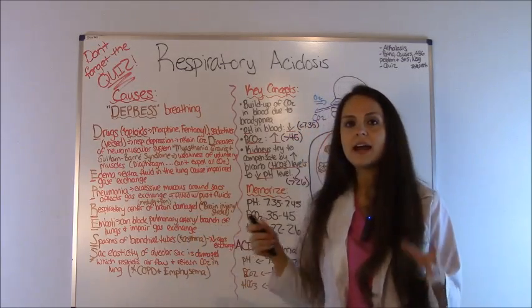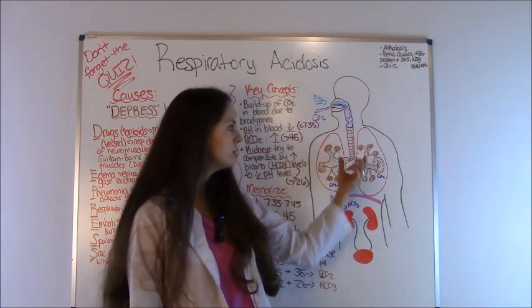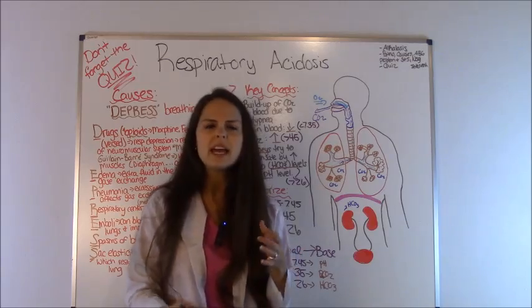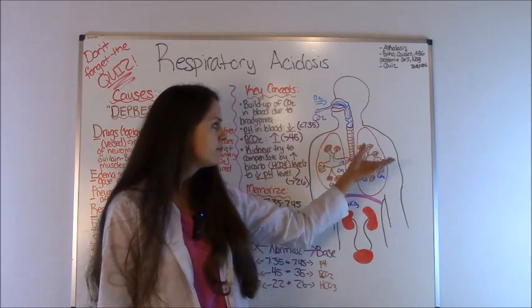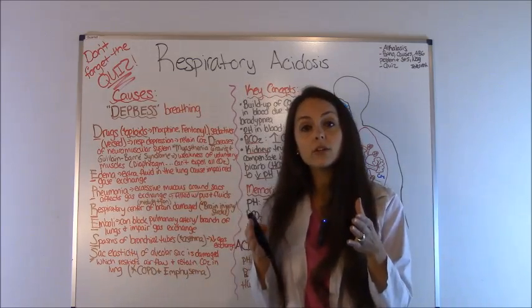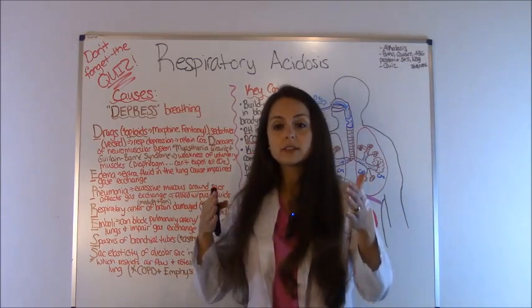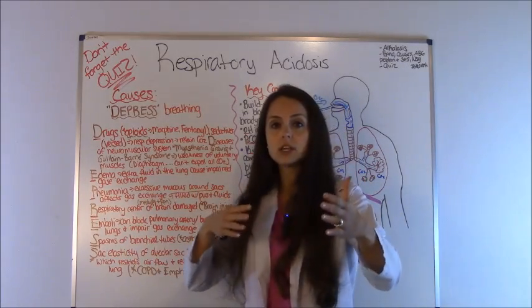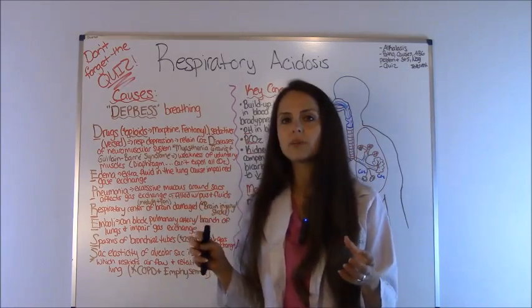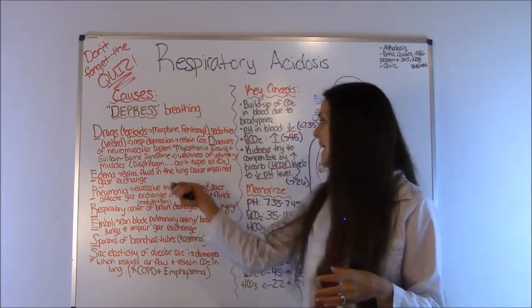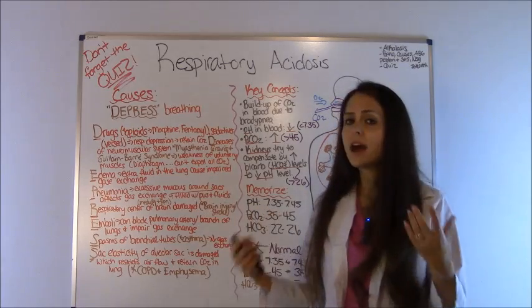E - Edema. Anytime you get extra fluid in these lungs, like in pulmonary edema, especially with congestive heart failure patients, that fluid is hanging around those sacs. Remember in the alveolar sacs we talked about how there's a gas exchange between oxygen and carbon dioxide, and it messes up those sacs. Those sacs can't open and close properly, so it just starts to retain the CO2.